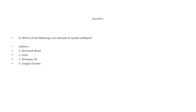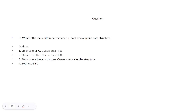Which of the following is an example of system software? The options are: Microsoft Word, Excel, Windows operating system, and Google Chrome. The correct answer is Windows operating system.